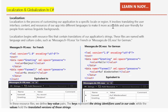Localization is the process of customizing our application to a specific locale or region. It involves translating the user interface content and resources of our app into different languages. The localization begins with the resource file that contains translations of our application strings. These files are named with the language and culture — for example, Messages.fr-FR.resx for French.